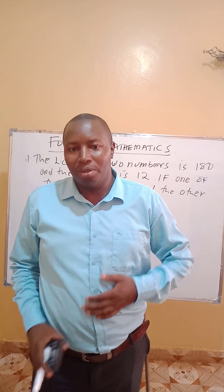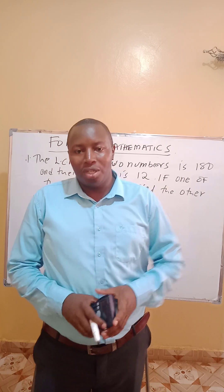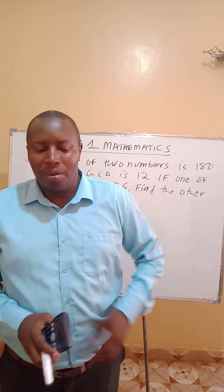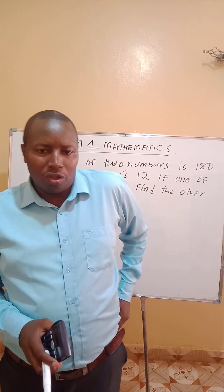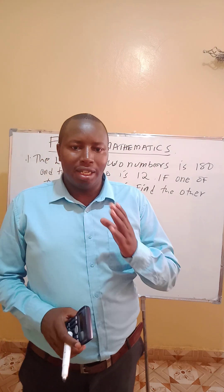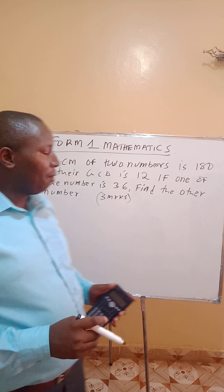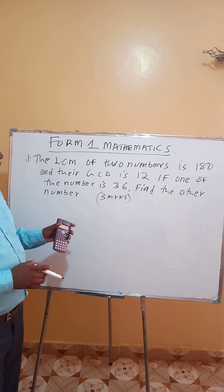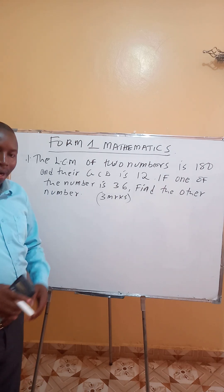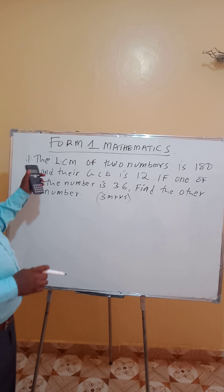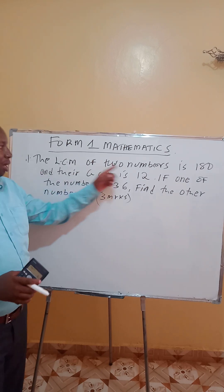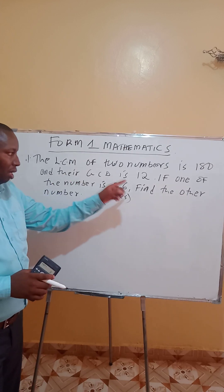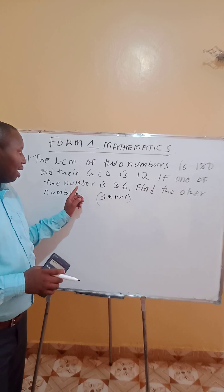Good morning. Today's lesson we are going to cover a question on GCD — GCD means Greatest Common Divisor. The question is a very crucial one for Form 1. The question is: the LCM of two numbers is 180 and the GCD is 12.